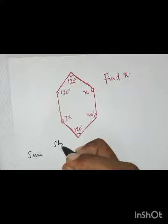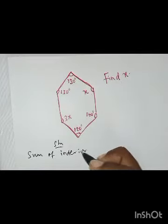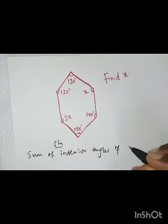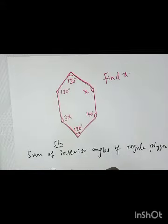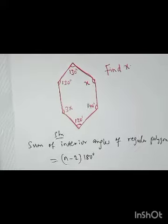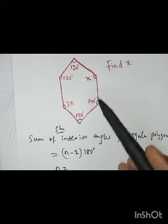So we know that sum of interior angles of regular polygon is the same thing as n minus 2 multiplied by 180 degrees. Where this n is the number of sides. So therefore n equals 6 here because we have 6 sides.